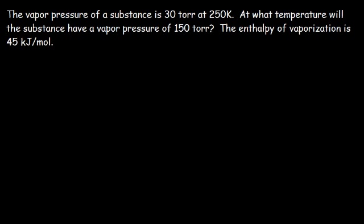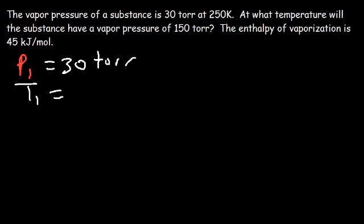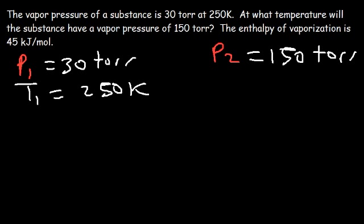Let's try another problem — feel free to pause and try it yourself. The vapor pressure of a substance is 30 torr at 250 Kelvin. At what temperature will the substance have a vapor pressure of 150 torr, given an enthalpy of vaporization of 45 kilojoules per mole? So P1 = 30 torr, T1 = 250 Kelvin, P2 = 150 torr, and we're solving for T2. We'll convert 45 kJ/mol to 45,000 J/mol.